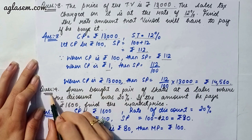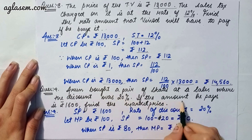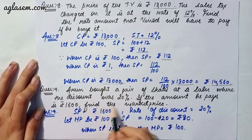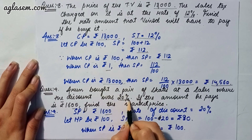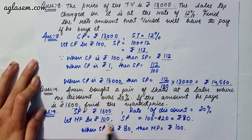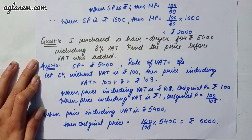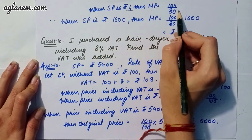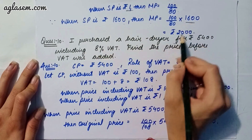Moving to our ninth question: Arun bought a pair of skates at a sale where the discount was 20 percent. If the amount he paid is rupees 1600, find the market price. Selling price is 1600 and rate of discount is 20 percent. Let market price be 100, so selling price is 100 minus 20, that is 80. When selling price is 1600, market price is 100 divided by 80 into 1600, giving rupees 2000.